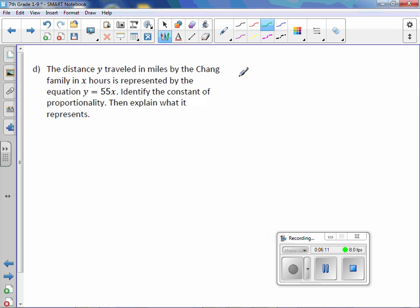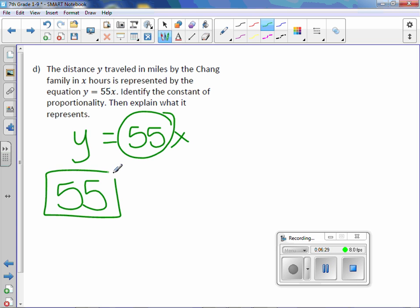Letter D. The distance y traveled in miles by the Chang family in x hours is represented by the equation y equals 55x. Identify the constant of proportionality, then explain what it represents. So 55 is the constant of proportionality.